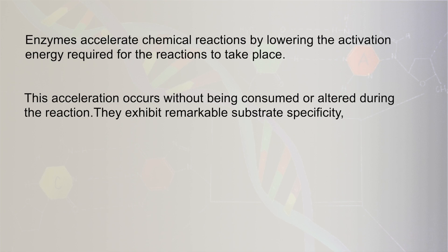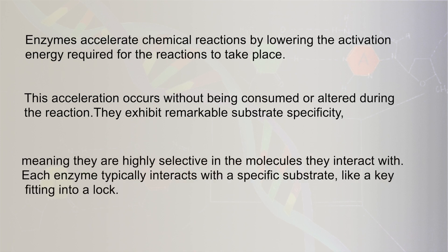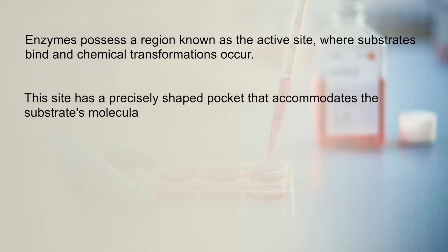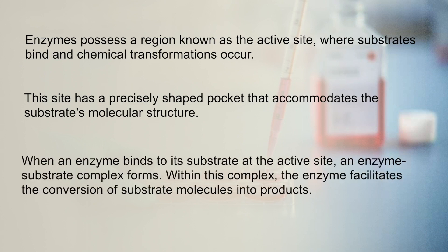Enzymes exhibit remarkable substrate specificity, meaning they are highly selective in the molecules they interact with. Each enzyme typically interacts with a specific substrate, just like a specific key fits a specific lock. Enzymes possess a region known as the active site, where substrates bind and chemical transformations take place. This site has a precisely shaped region or pocket that accommodates the substrate's molecular structure. When an enzyme binds to its substrate at the active site, an enzyme-substrate complex, or ES complex, forms, and the enzyme facilitates the conversion of substrate molecules into the required products.